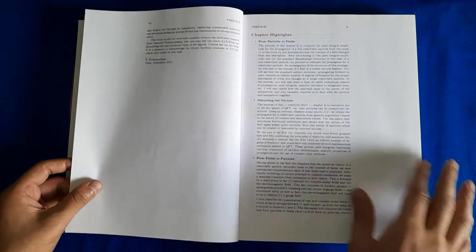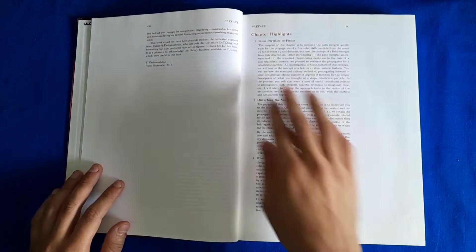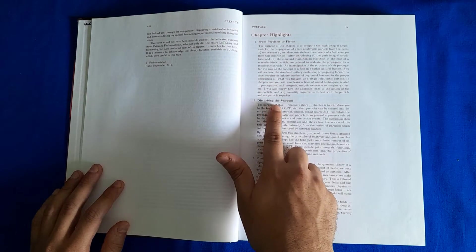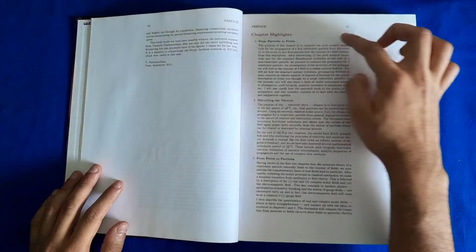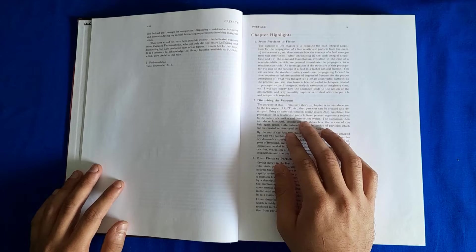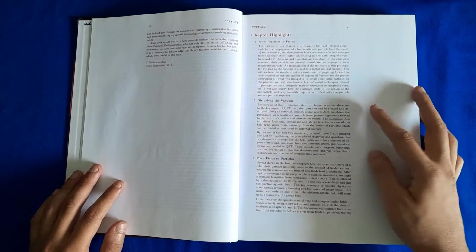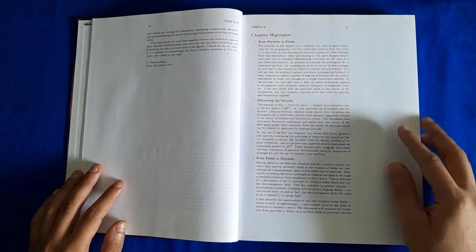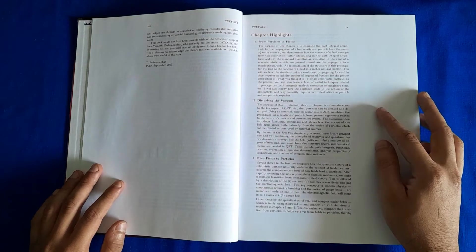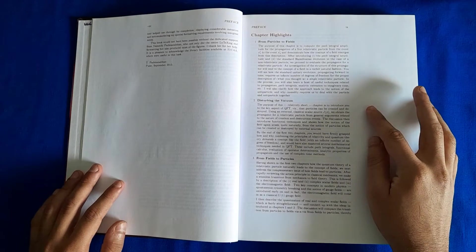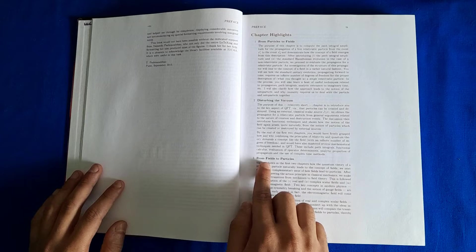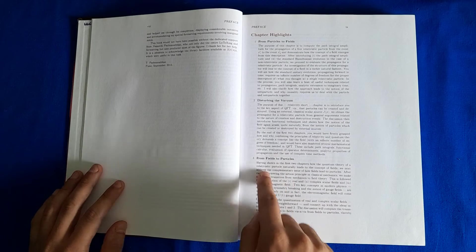These are the highlights or the contents. The first part is focused on particles to fields, so how fields naturally come about when you try to quantize relativistic particles. The second part is disturbing the vacuum, which deals with quantum vacuum and how the idea of vacuum completely changes when you do quantum field theory, and how there's all fuzziness and just nothingness, and also the concepts of particles, anti-particles.